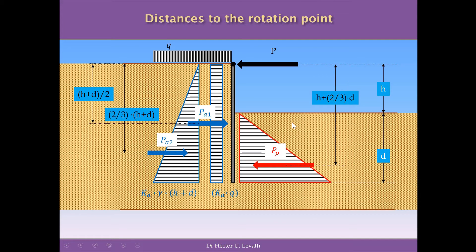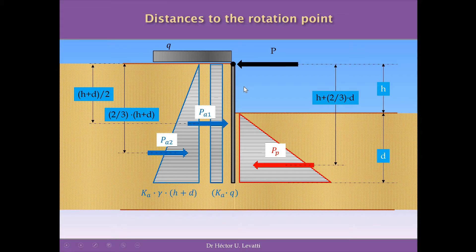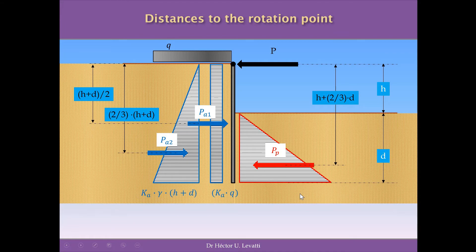Remember that the active pressures are the actions and the passive pressure are the reactions. So, in this case, the distances we need are referred from the top of the wall — this point you can see on the screen. All the distances are referred to this point. The distance from this rectangular pressure diagram is H plus D divided by 2. The distance from this triangle in blue is two-thirds of the height, and the distance from point A to the passive pressure is H plus two-thirds of D.